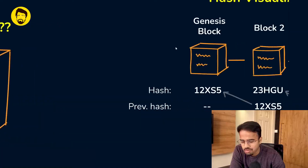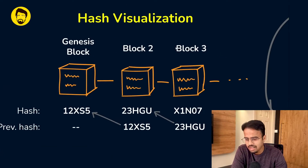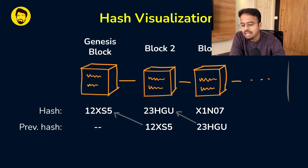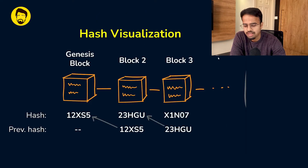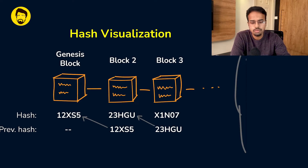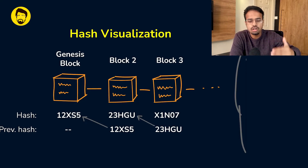Let's see how this hash helps connect all the chains of the blockchain. The first block is called a genesis block, which is slightly different in that it does not have a previous hash. The hash of the genesis block is saved in block number two, and all that data and information is used to calculate the hash of the second block — suppose it comes out to be '23hgu'. That '23hgu' is then passed on to block number three along with all its transaction data to create block three's hash, which becomes 'x1n07'.